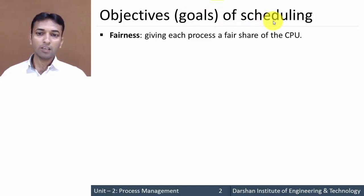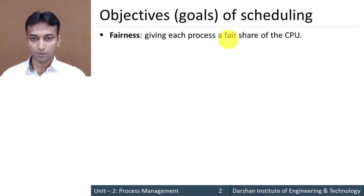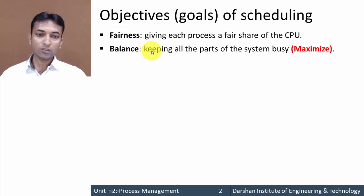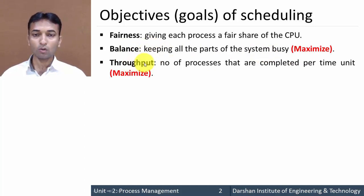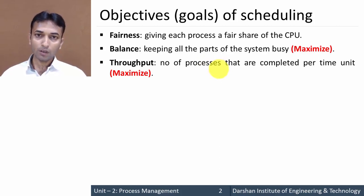The first objective is fairness — giving each process a fair share of CPU, meaning every process in the system should get CPU time fairly. The second is balance — keeping all parts of the system as busy as possible to get maximum throughput. The third is throughput — the number of processes completed per time unit, and it should be maximum.